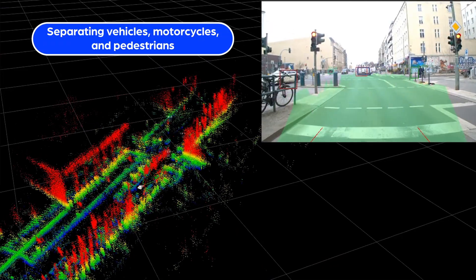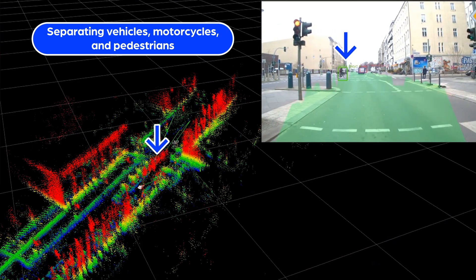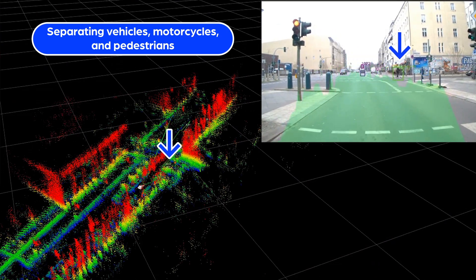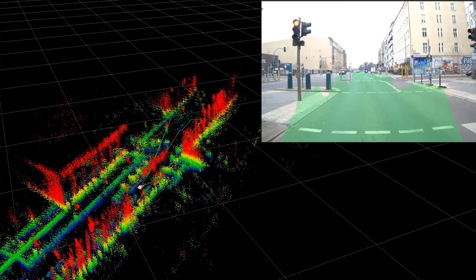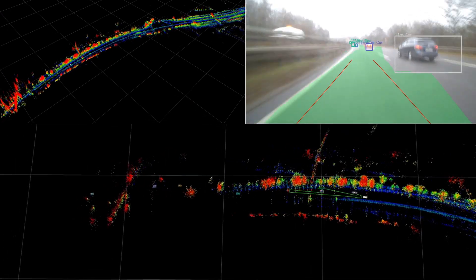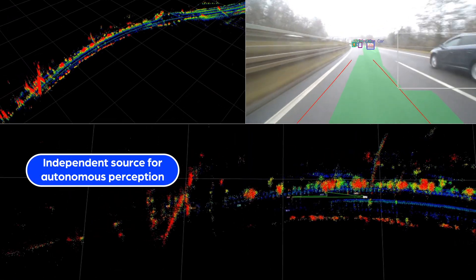It reliably separates vehicles, motorcycles, and pedestrians, ensuring urban safety with detection of speed bumps, manholes, and vulnerable road users, even in the dark, meeting NHTSA regulations. Our radar excels as an independent source for autonomous perception.